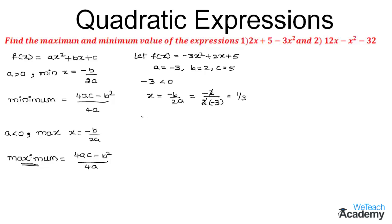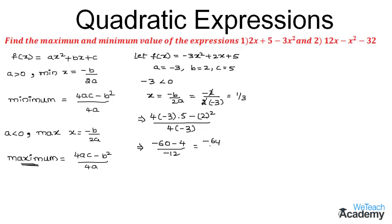Now let us find the maximum value by using the formula (4ac - b²) / 4a. On substituting the values we get 4 × (-3) × 5 - 2² divided by 4 × (-3). That gives us -60 - 4 divided by -12. So -60 - 4 = -64 divided by -12, and on simplifying this we get the value as 16/3. So the function f(x) is maximum at x = 1/3 and the maximum value is 16/3.